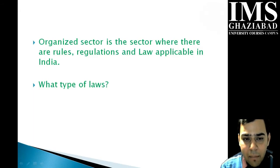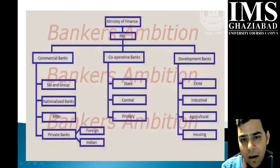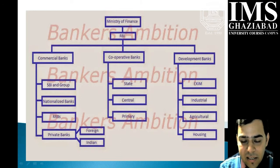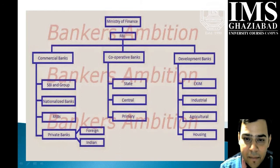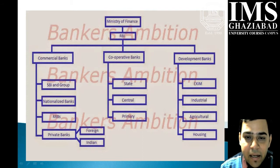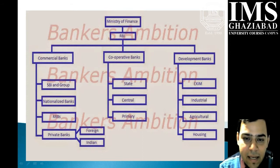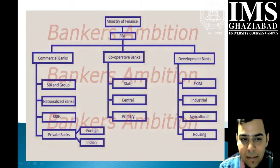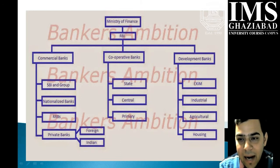The organized sector is the one where the supreme authority is the Ministry of Finance, which gives suggestions and guidelines to be implemented by the Reserve Bank of India. The Reserve Bank takes care of the entire banking system in India belonging to the organized sector. This entire banking system can be divided into three parts: commercial banks, cooperative banks, and development banks.